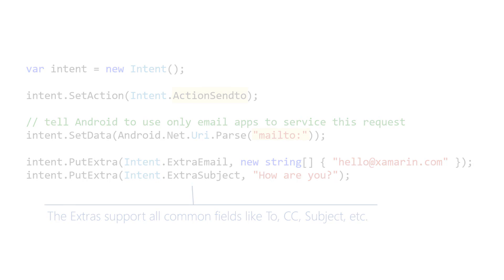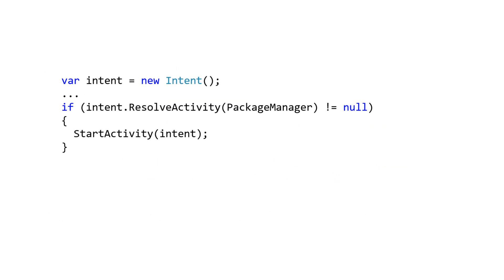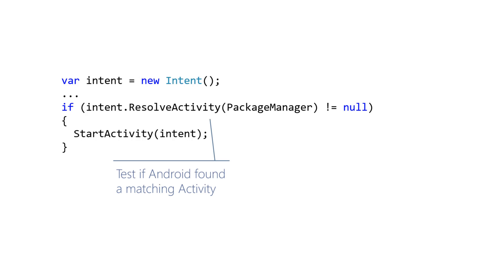To avoid a runtime exception, you should verify that your implicit intent is valid before calling StartActivity. Implicit intents are error prone — you cannot know ahead of time if the user's device will have an activity installed that can service your request.